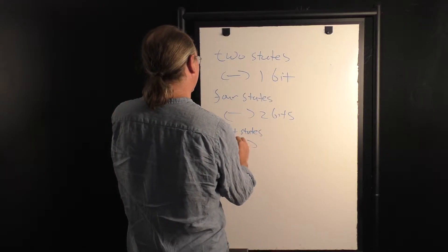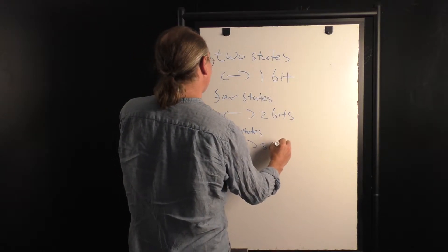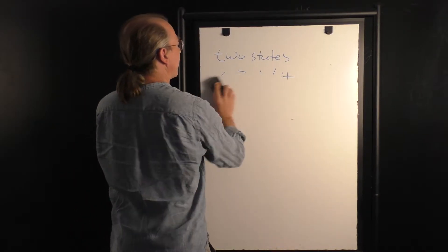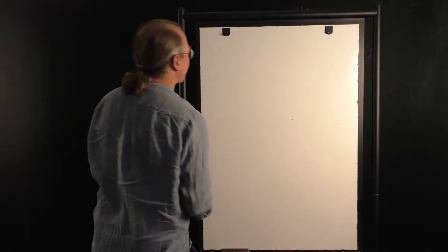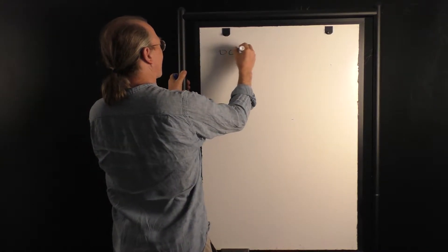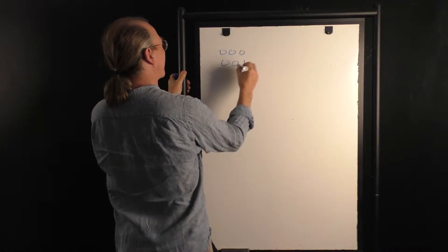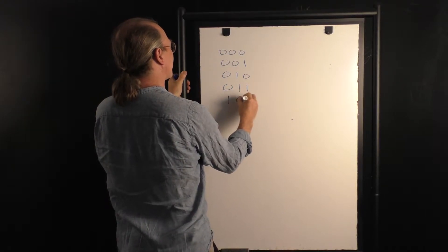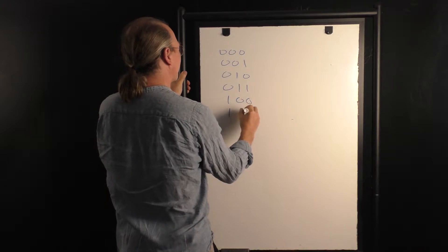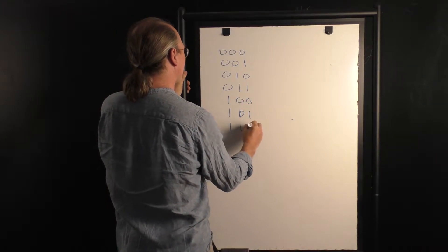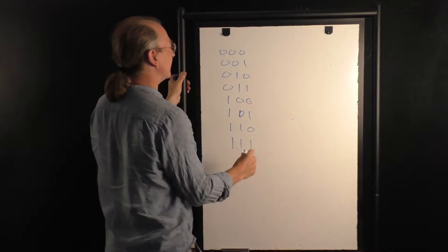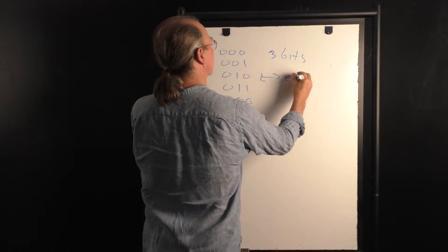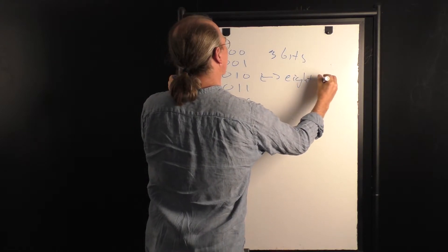That corresponds to three bits. So why is this so? If I look at three bits, I can have 0 0 0, 0 0 1, 0 1 0, 0 1 1, 1 0 0, 1 0 1, 1 1 0, and 1 1 1. Three bits, eight states.